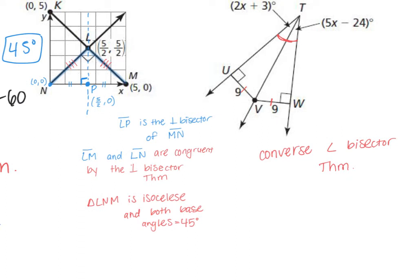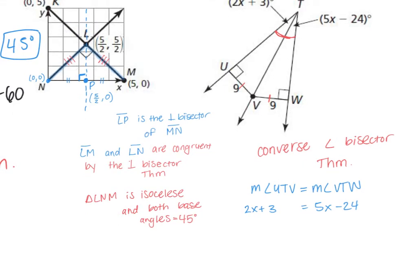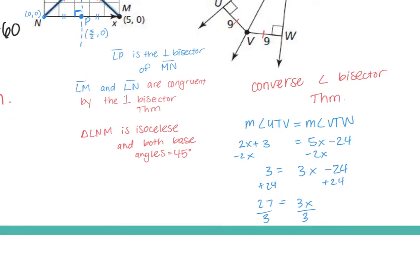We can write: the measure of angle UTV equals the measure of angle VTW. Angle UTV in terms of x is 2x plus 3, and angle VTW is 5x minus 24. Solving: subtract 2x from both sides, get 3 equals 3x minus 24. Add 24 to both sides: 27 equals 3x. Divide by 3: x equals 9.